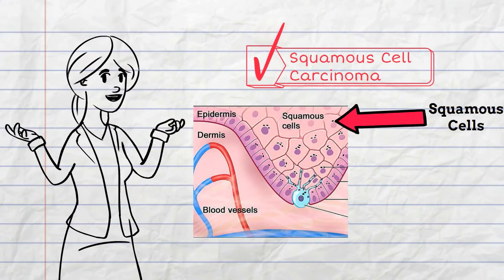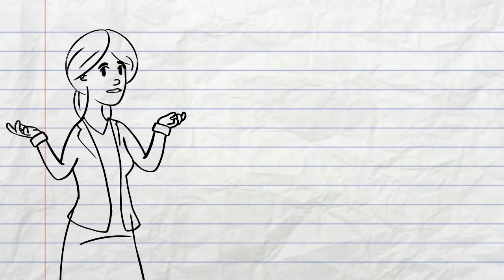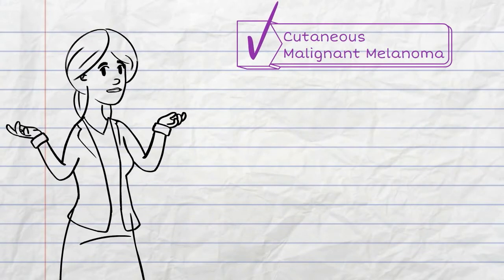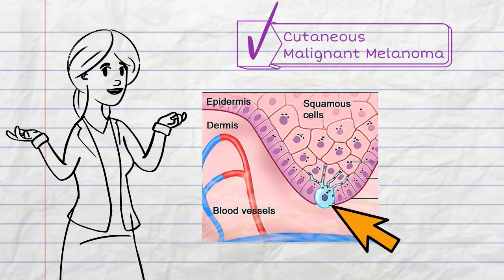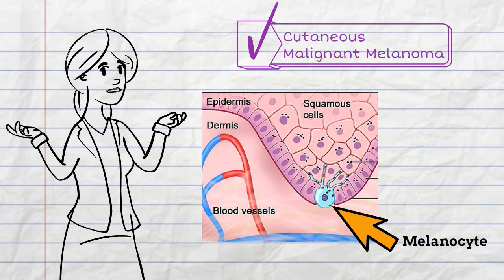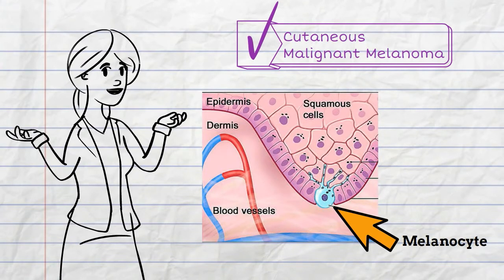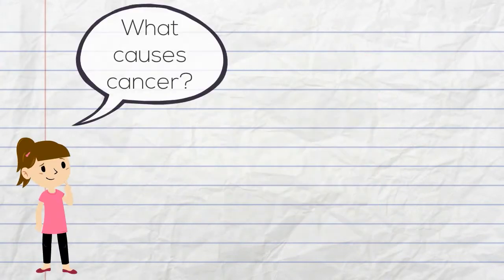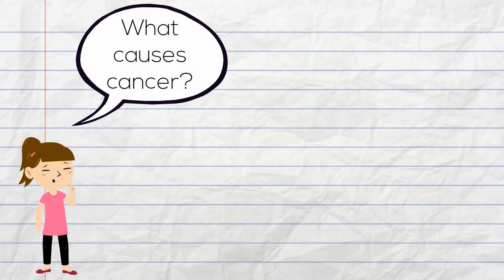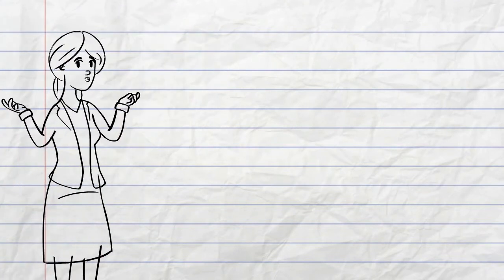The third type of skin cancer is cutaneous malignant melanoma, which arises due to cancer of the melanocytes in the bottom-most layer of the epidermis. So what exactly causes skin cancer?